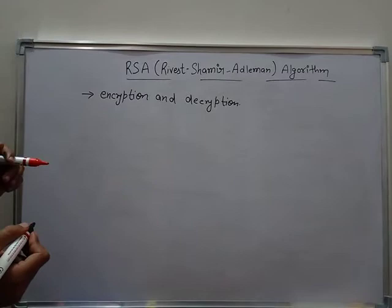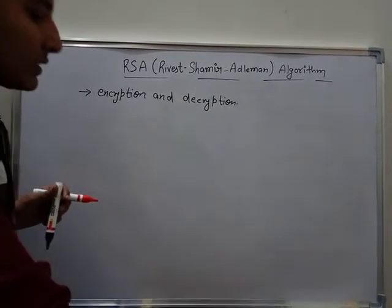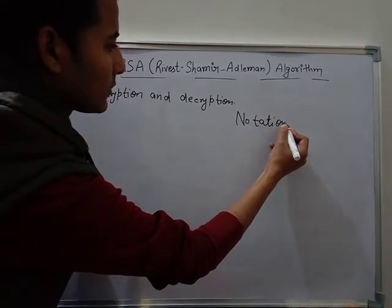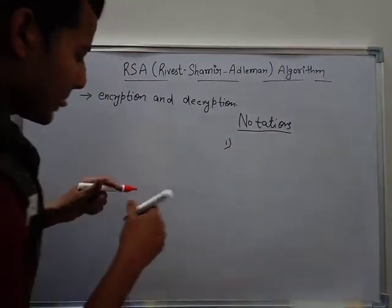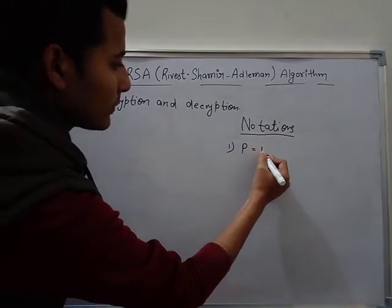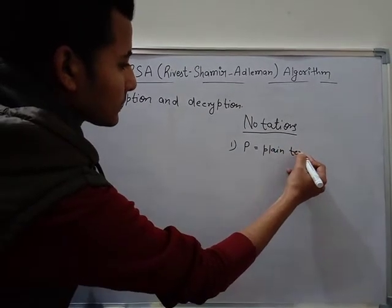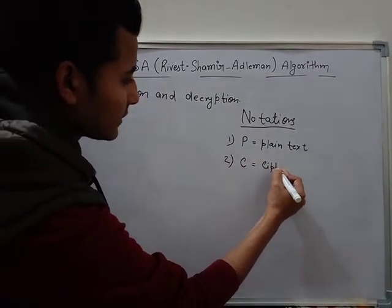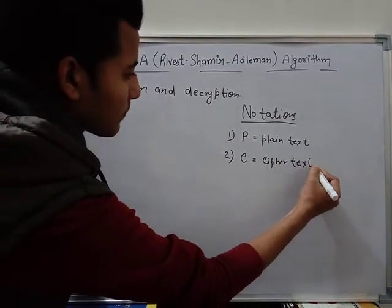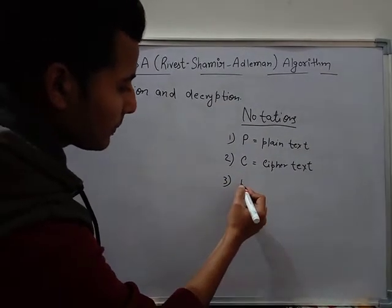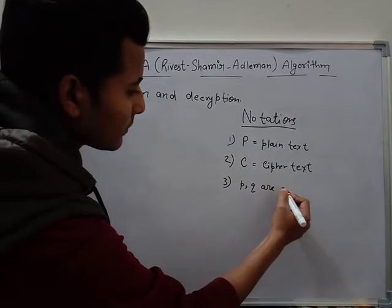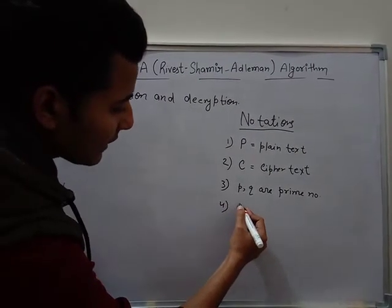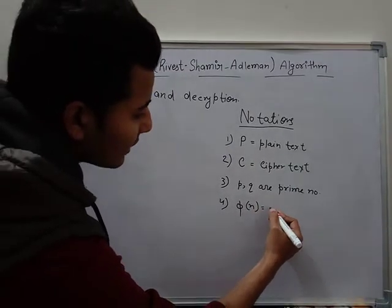Before we go to the algorithm, we will define some notations that will be used in the algorithm. First, we define capital P for plaintext, and capital C for ciphertext. Here P and Q are prime numbers, and phi of N is the Euler's Totient function.